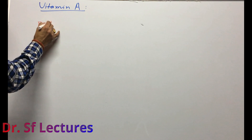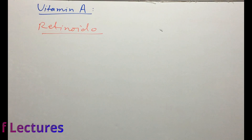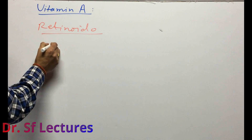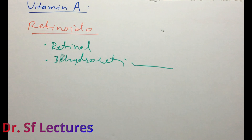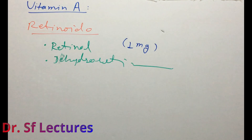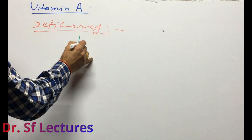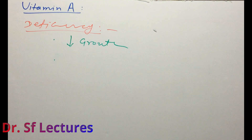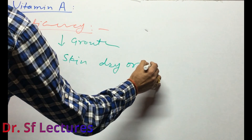As drugs, vitamin A compounds include retinoids. There are two types: retinol and dehydroretinol. The dose of retinol used for vitamin A deficiency is 1 mg, and the dose of dehydroretinol is 4 mg. Deficiency of vitamin A will decrease or stop growth and will not maintain healthy skin — the skin becomes dry or rough.